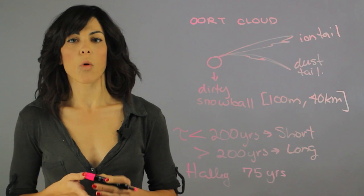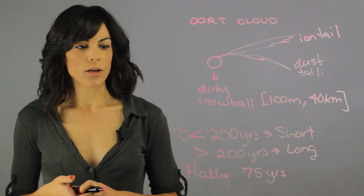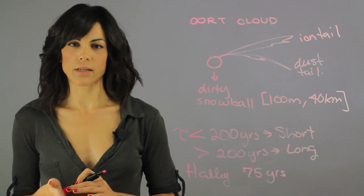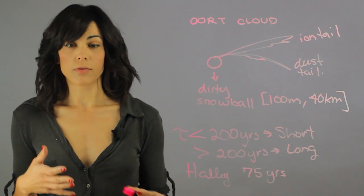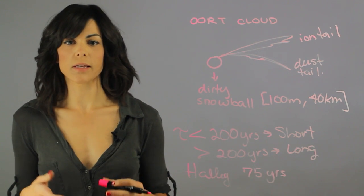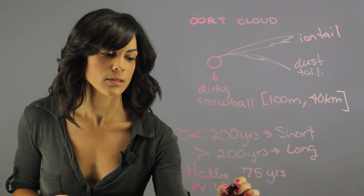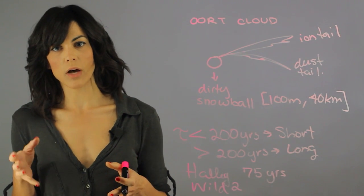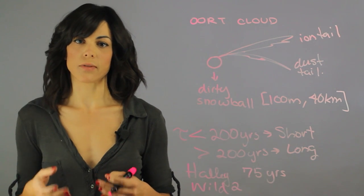We believe we have over 4,000 comets in the solar system. One of the most important is Wild 2, which brought evidence about life in the solar system. When we studied Wild 2's composition, we realized it had the building blocks of life.